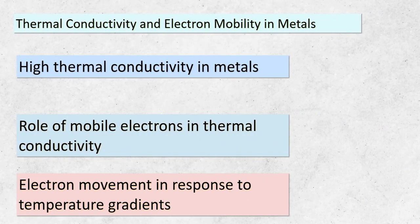Welcome back, students. Today, we're delving into the intriguing world of metals and their remarkable properties. Our focus turns to the high thermal conductivity exhibited by metals. Have you ever wondered why metals feel so cold to the touch in winter? It's because of their unique property of conducting heat exceptionally well. This property is closely tied to the presence of mobile electrons within metals. These electrons can move freely in response to temperature differences, allowing them to carry kinetic energy swiftly throughout the solid structure. Imagine these electrons as tiny messengers of heat, ensuring that warmth travels efficiently within the metal. The movement of electrons plays a pivotal role in shaping the behavior of metals.